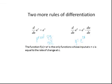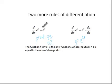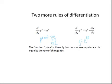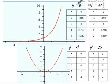Here are two more rules we're going to be learning. The first is interesting: this is the only kind of function where, when you take the derivative of it, it's actually equal to itself. It's the only function where the input at x equals c is equal to the rate of change at x equals c. I want to show you what exactly that means — this is the graph of e to the x.